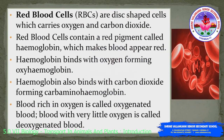The first type of blood cell is the red blood cell, also called RBCs. They are disc-shaped cells which carry oxygen and carbon dioxide. Red blood cells contain a red pigment called hemoglobin. The presence of hemoglobin makes the blood appear red. When the blood carries oxygen, the hemoglobin binds with the oxygen forming oxyhemoglobin. Likewise, when the blood carries carbon dioxide, the hemoglobin binds with it forming carbaminohemoglobin.